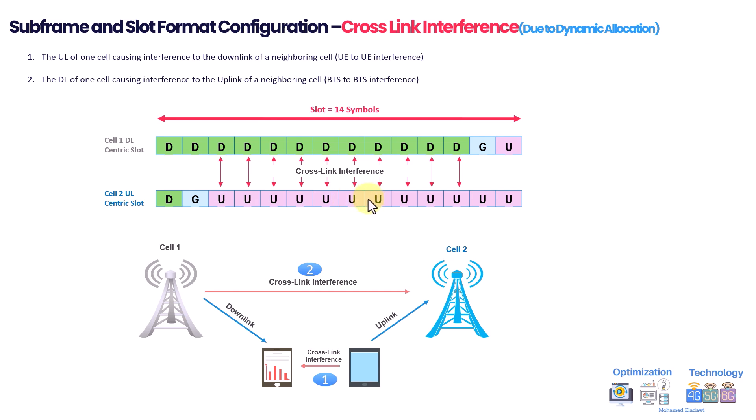That's why dynamic configuration is more recommended for use in small cell or indoor scenarios where you have fewer macro sites, and where it can be controlled within one site or one cell to avoid these kinds of cross-link interference scenarios. The second case of cross-link interference can come from propagation delay. Assuming a static slot configuration fixed between source and target, there can still be a propagation delay due to, for example, ducting.